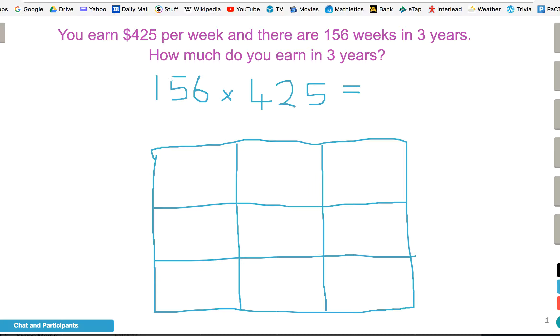We then break up the numbers using the strategy we've used previously. 156 breaks up into 100, 50, and 6. 425 breaks up into 400, 20, and 5. Then we just do our grid multiplication.